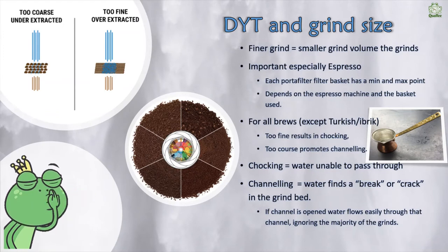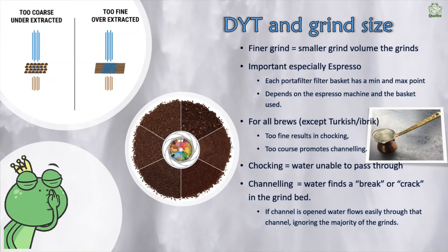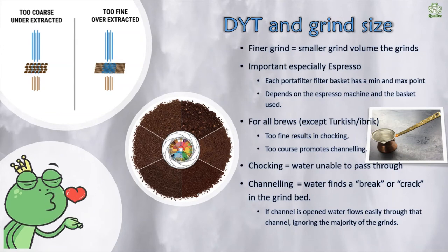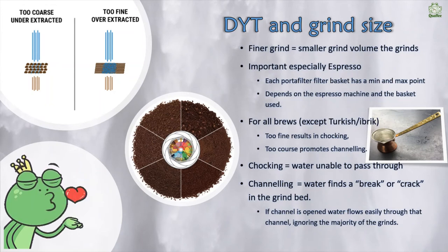If your grinds are too fine, the coffee will choke — the water won't be able to travel through, meaning the brew will drip very slowly and result in over-extraction. If your coffee is too coarse, the water finds a quick path through and creates a channel, avoiding the rest of the coffee bed, resulting in under-extraction. It's important that when setting your grinder you know roughly what times you're aiming for. The 25-second range for espresso, or 2.5 to 4 minutes for pour-over brews — these are all linked to ensuring your grind matches the brew type. Going too quick or too slow means the grind is either too coarse or too fine.